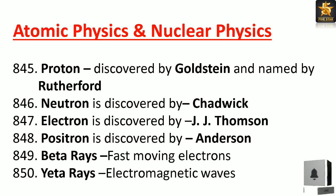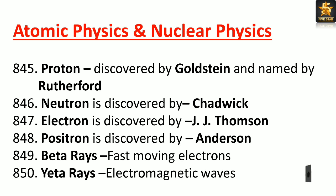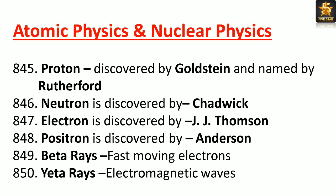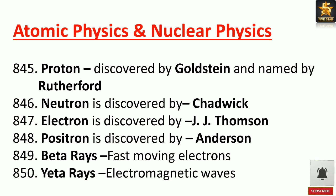Proton: discovered by Goldstein and named by Rutherford. Neutron is discovered by Chadwick. Electron is discovered by J.J. Thomson. Positron is discovered by Anderson.